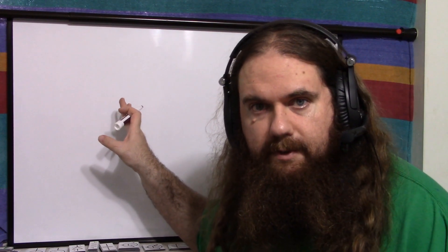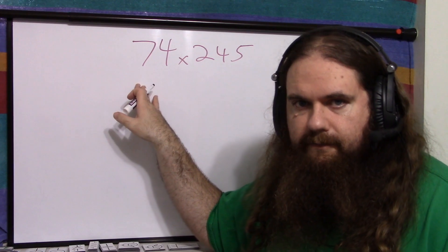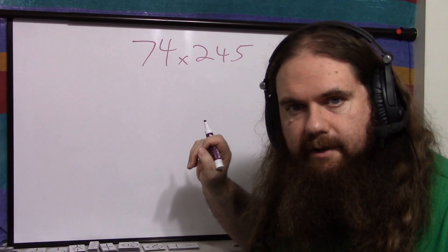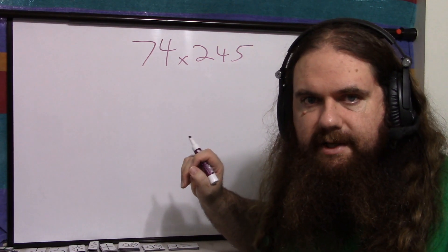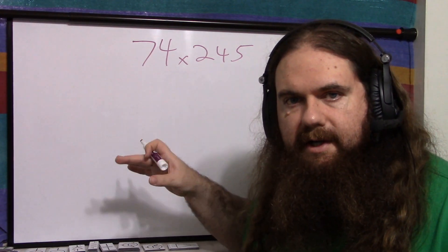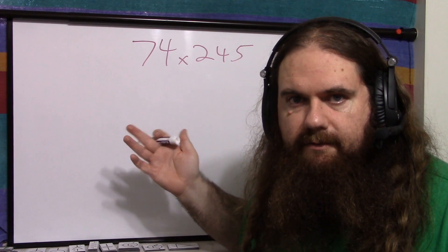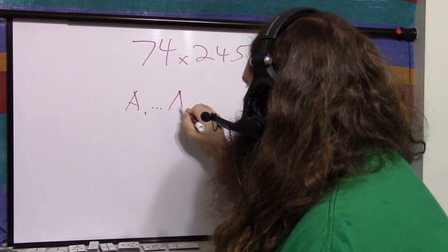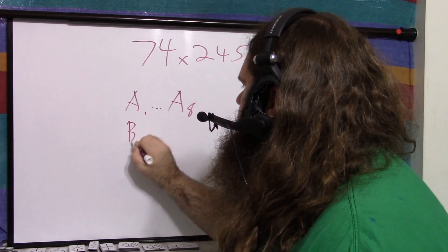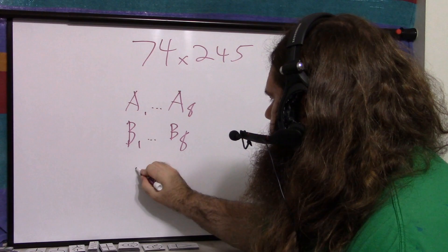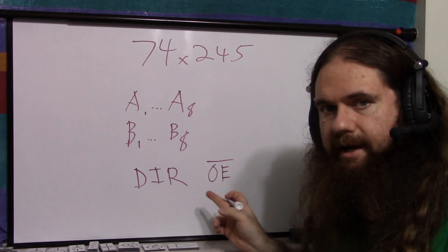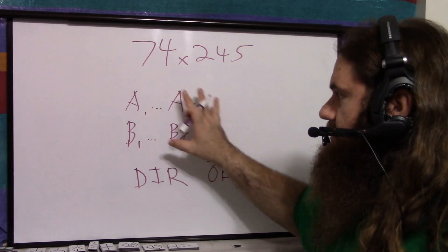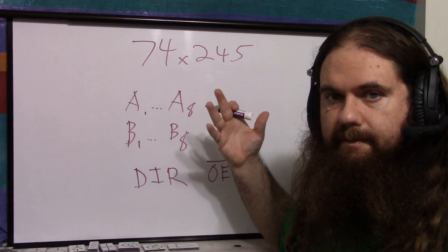The 74 family — 74X chips, TTL variants — chip number 245 is an octal bus transceiver, meaning it has 8 bits, all connected together as an 8-bit transceiver. Besides VCC and ground, it has A1 to A8 and B1 to B8 as your two sides. Then there's a direction pin and an active-low output enable. If output enable is high, the chip is off and both sides are high impedance.